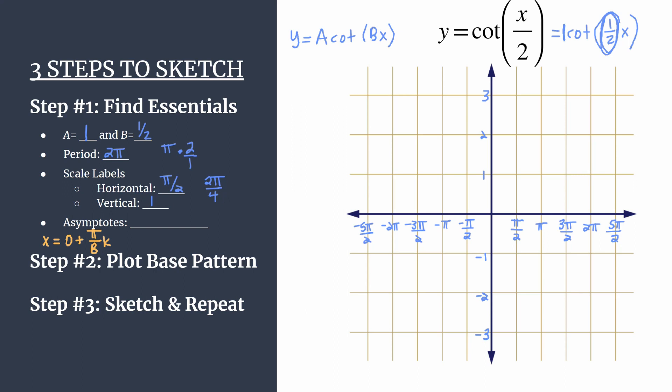And k represents any integer. So depending on which one you substitute in, you'll get a different asymptote for the graph. So the asymptote here for our specific equation, x equals 0 plus pi over b we said was 2 pi, k.